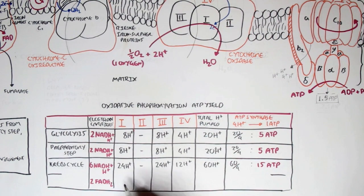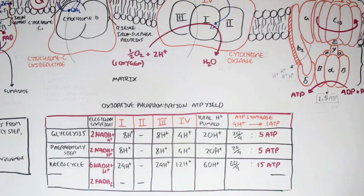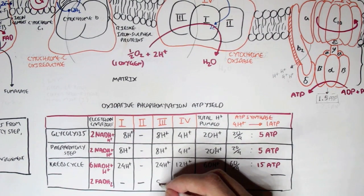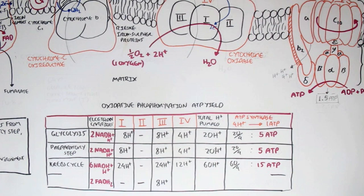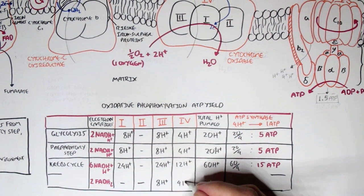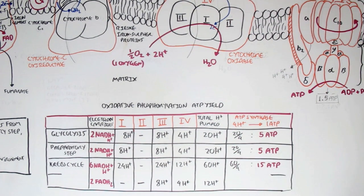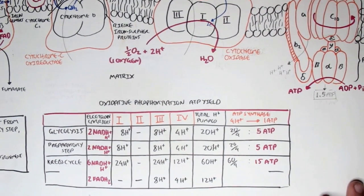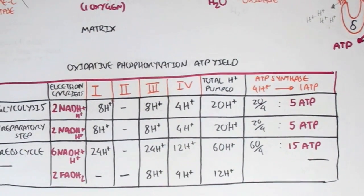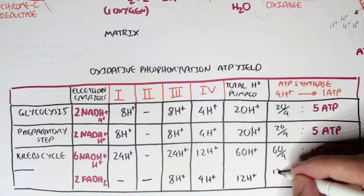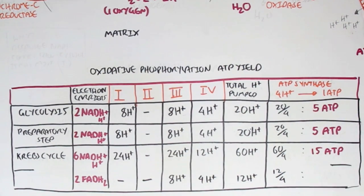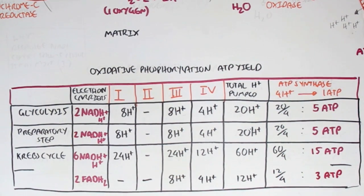Going back to our table of ATP yield, we look at the two FADH₂s and how many hydrogen ions they pump. At complex I, they do not go through it, so no hydrogen ions are pumped. Complex II, no hydrogen ions. Complex III will pump out four hydrogen ions each, giving a total of eight hydrogen ions. Complex IV, one FADH₂ pumps out two hydrogen ions, so two FADH₂s pump four hydrogen ions in total. The total hydrogen ions pumped by two FADH₂s is 12 hydrogen ions. 12 divided by four gives us three ATP produced by two FADH₂s.